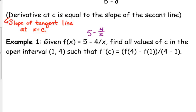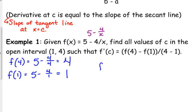Let's go ahead and find f of 4 minus f of 1. So, we need to plug in 4 into our function and 1. So, when we plug in 4, we get 5 minus 1, so that gives us 4. And when we plug in 1, that gives us 5 minus 4, which is 1. So, we are looking for where f prime of c is equal to 4 minus 1 over 4 minus 1, which would be 1.